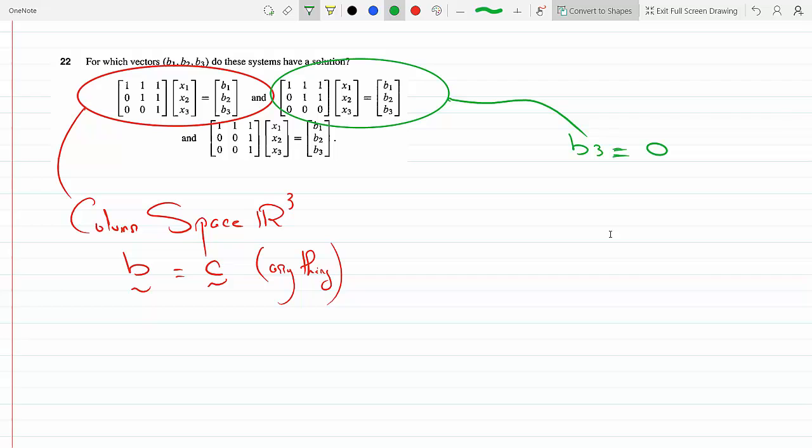So that's the condition. And for the third one, let's do the third one here. Okay, this third one—we notice that the last two rows are the exact same thing, which means technically b3 has to equal b2.